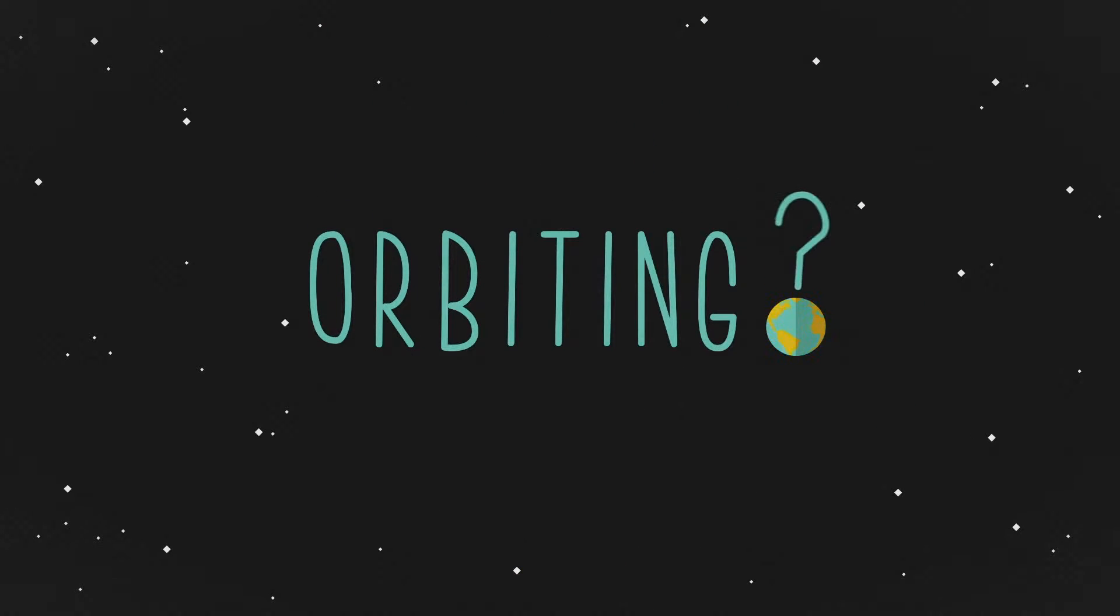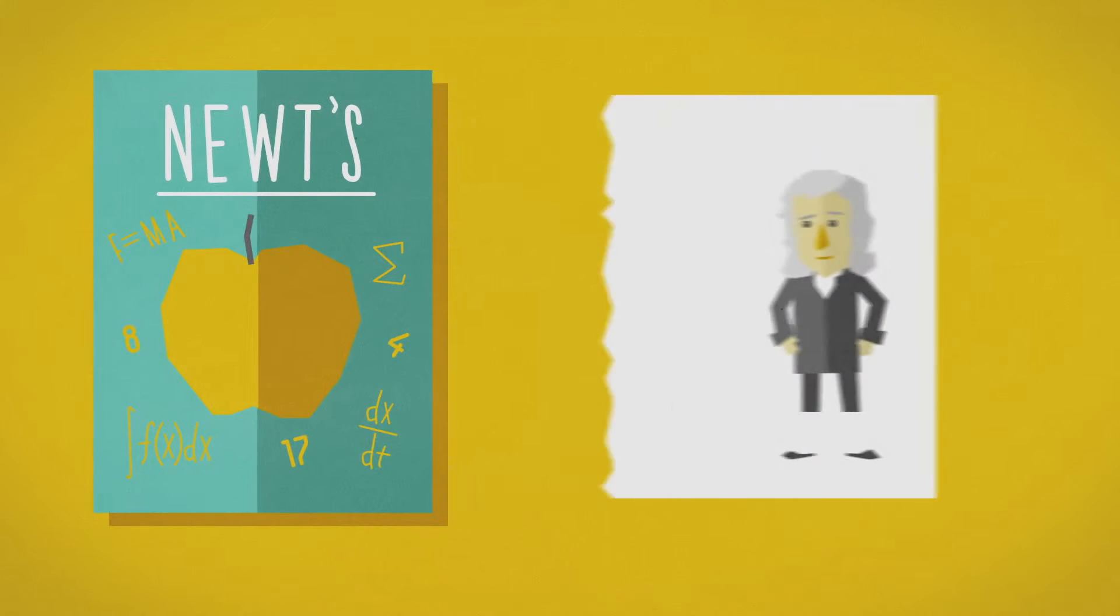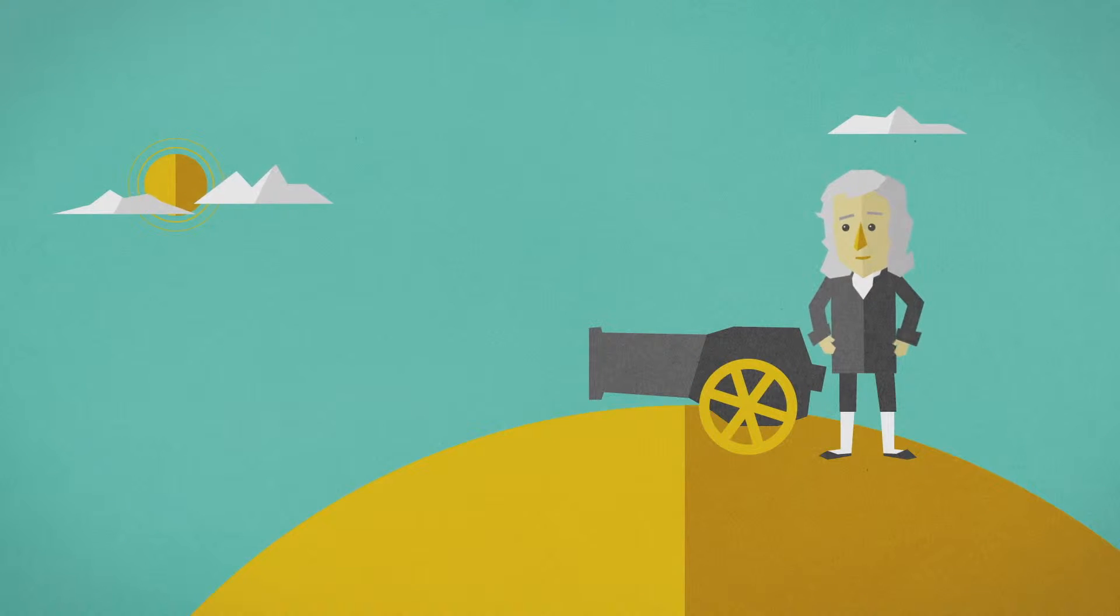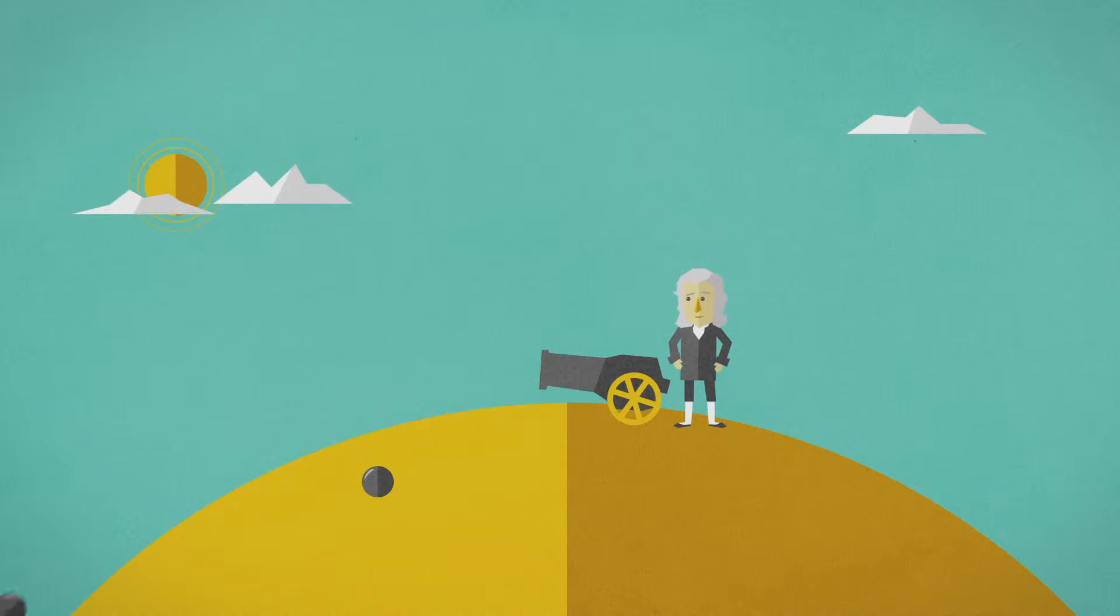So, how does orbiting work? Let's take a page from Isaac Newton. He had this idea, a little mental experiment. You take a cannon, you put it on top of a hill. If you shoot the cannonball, it goes a little bit ways. But if you shoot it harder, it goes far enough so that it lands a little bit past the curvature of the Earth.